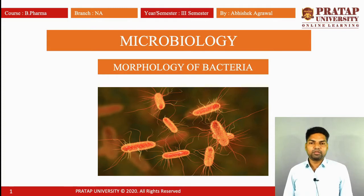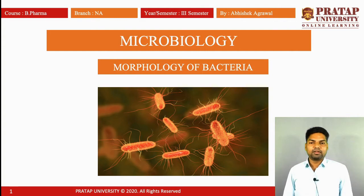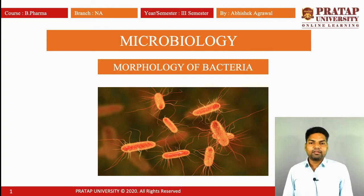What is a cell? Cell is the smallest unit of life. The cell is divided into two parts: first is with nucleus, and second one is without nucleus. The cell with nucleus is called the eukaryotic cell, and the cell without nucleus is called the prokaryotic cell. The prokaryotic cell contains bacteria, and the eukaryotic cell contains plants, animals, and fungi.